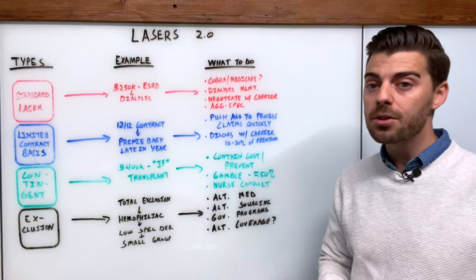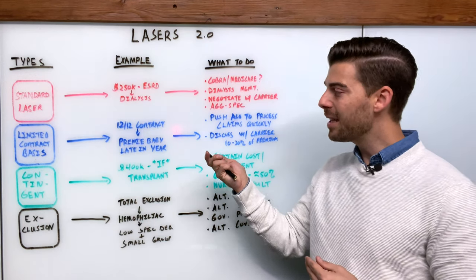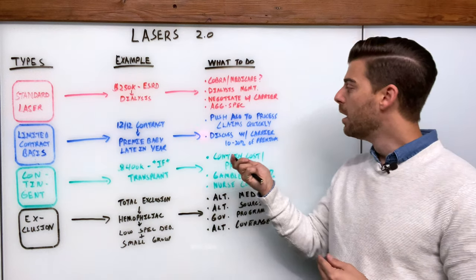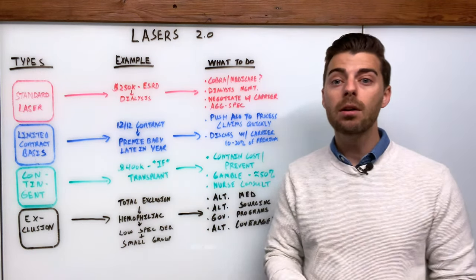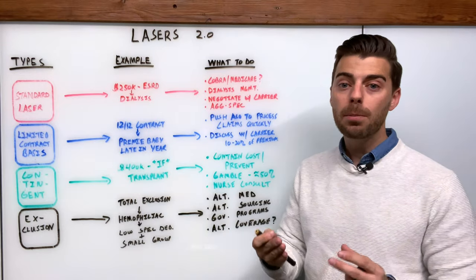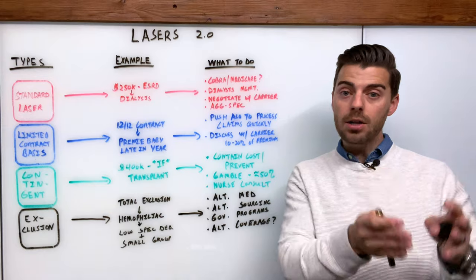If there's a quoting carrier trying to take over the business, they're probably, especially since preemie babies can be millions of dollars potentially depending on how long they're in the NICU, they may say you know what, we're not taking any of that run-in. So you really as a broker need to make sure that you're pushing the current administrator to process those claims as quickly as possible because they should be obviously applying to that current contract year.